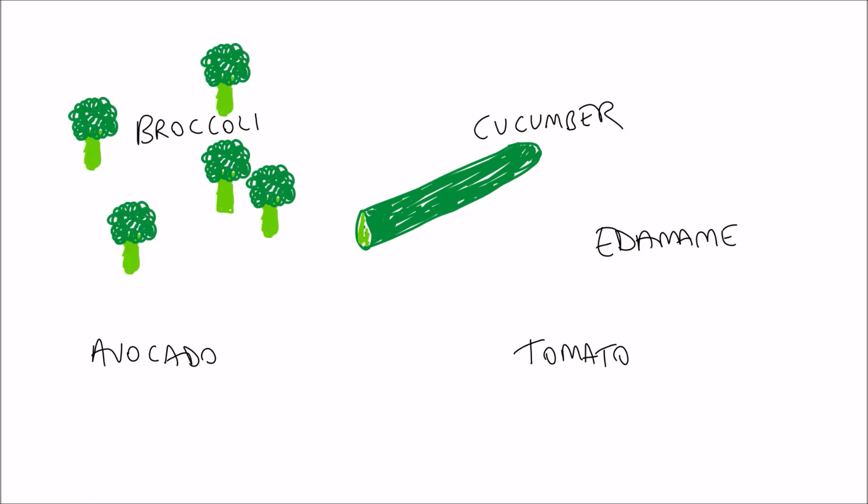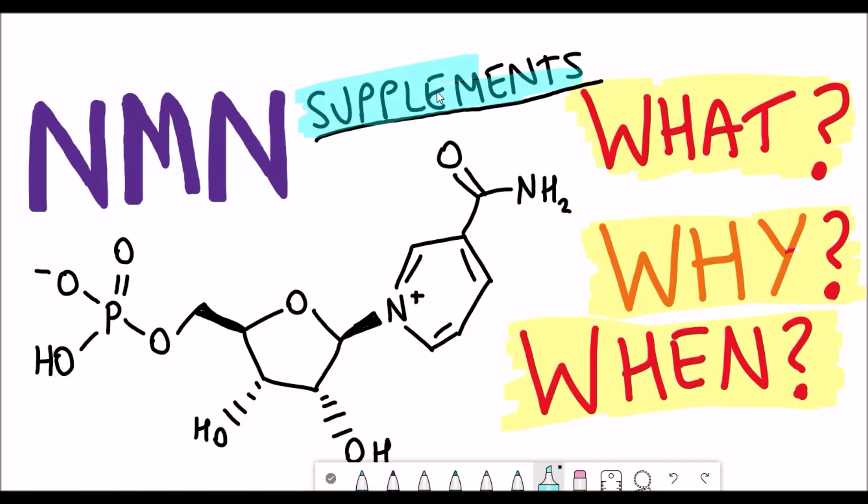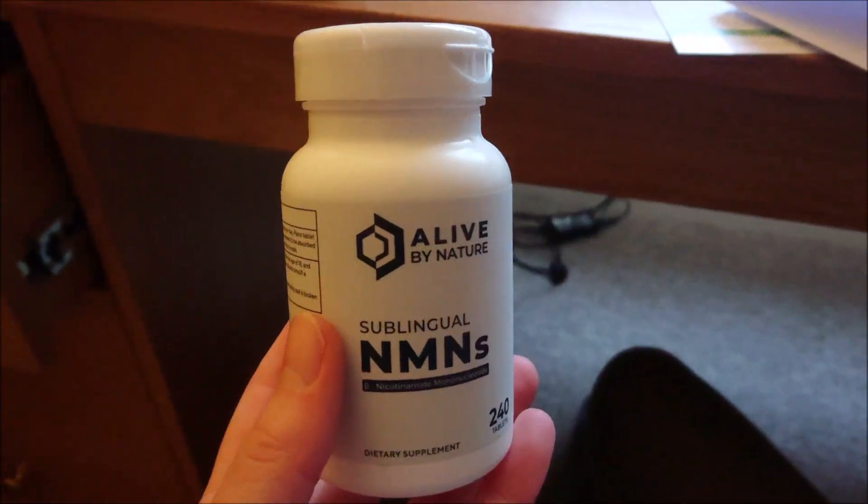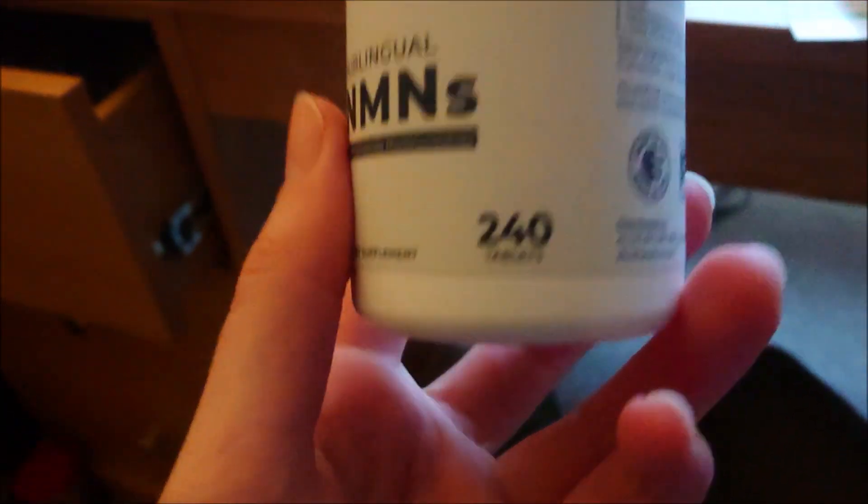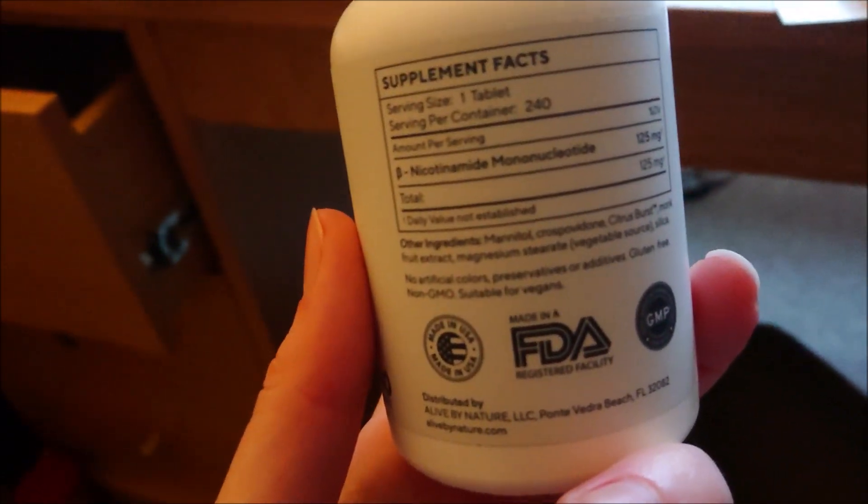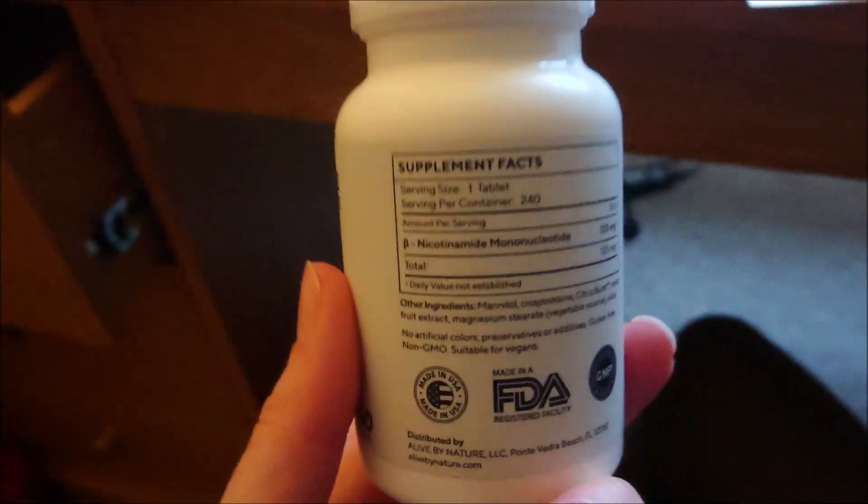You can actually get NMN from your diet. NMN is seen in broccoli and cucumber but you'll need to have a lot of broccoli to get a high dose of NMN. So the alternative strategy is to take NMN as supplements. This is what I've been taking for just over a week now. I take one tablet a day, so that is around 125 milligrams of NMN that I take daily.